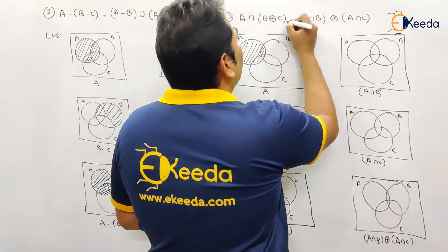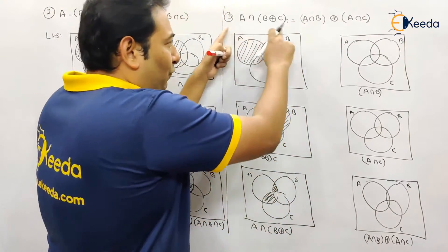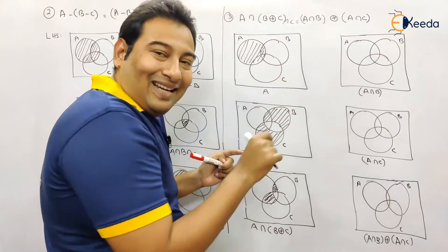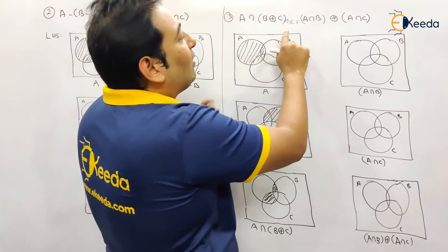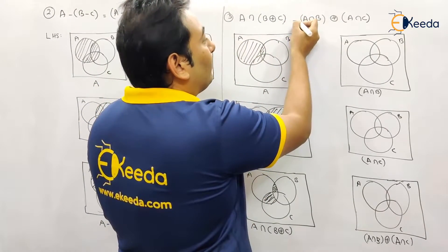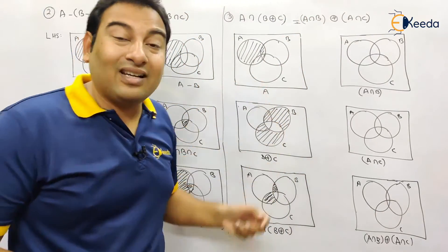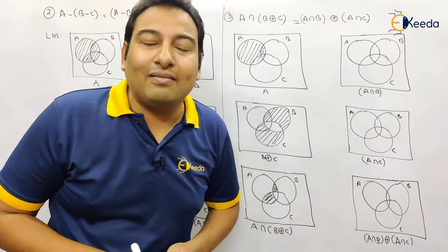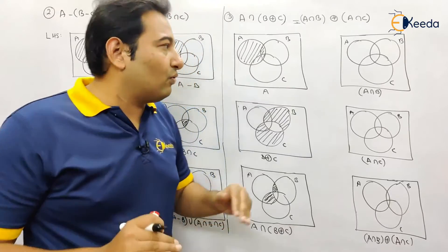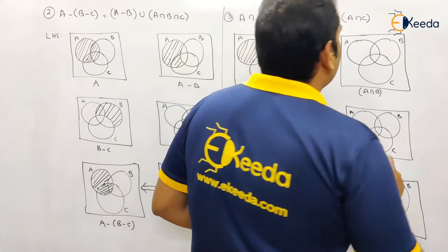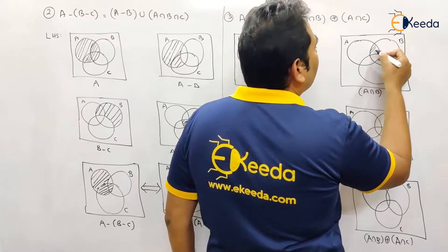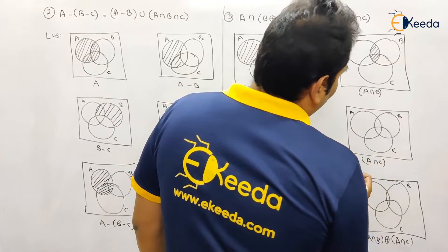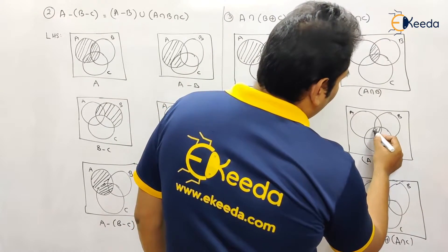Suppose there is one more part — let's say intersection with something. Draw one more diagram, shade it, and then try to find the intersection step by step. From experience I am saying students generally make this mistake — they don't consider this A, they try to imagine and then they end up messing up everything. So please follow the procedure. Intersection B means whatever is common between A and B, so this part will be shaded. A intersection C means this part will be shaded.